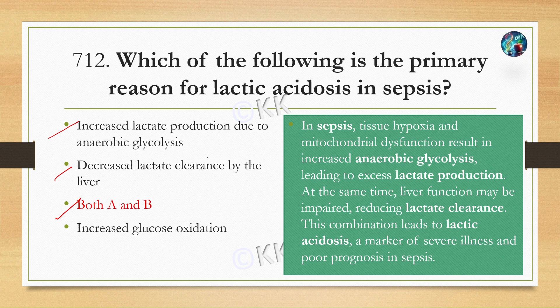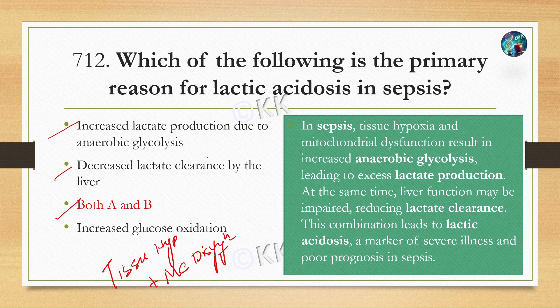In sepsis, tissue hypoxia and mitochondrial dysfunction result in increased anaerobic glycolysis, leading to excess lactate production. At the same time, liver function may be impaired, reducing lactate clearance. The combination of both leads to lactic acidosis, which serves as a marker of severe illness and poor prognosis in sepsis.